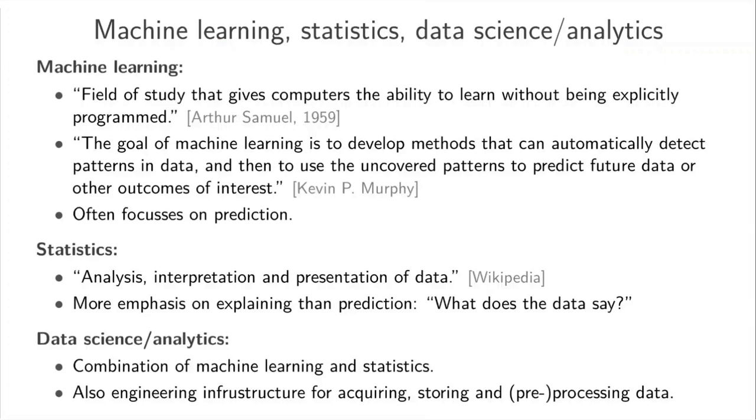So I alluded to this on the previous slide but there's sometimes an overlap between the terms machine learning statistics and data science or data analytics. It's actually quite hard to distinguish these areas from each other and it's probably not that meaningful to do so but let's briefly try. A bunch of clever people have defined machine learning in the past. I think the first time the term was used was by Arthur Samuel who said that machine learning is the field of study that gives computers the ability to learn without being explicitly programmed. A more recent definition by Kevin Murphy who wrote a really nice textbook is that machine learning has the goal to develop methods that can automatically detect patterns in data and then use the uncovered patterns to predict future data or other outcomes of interest.